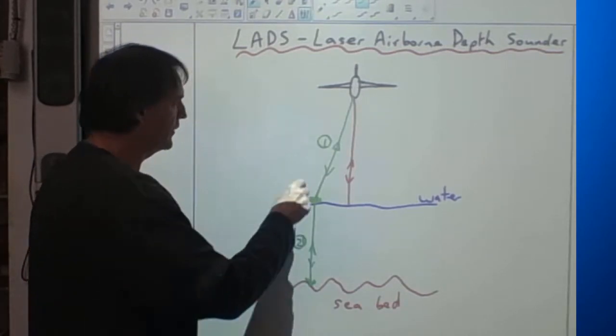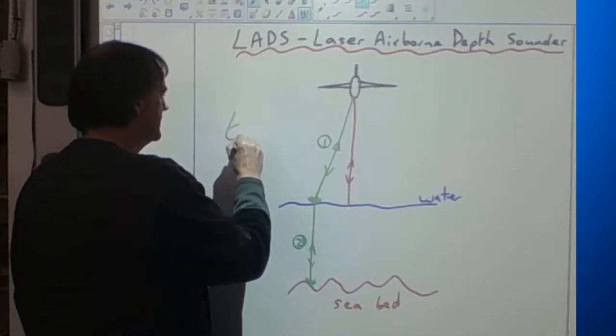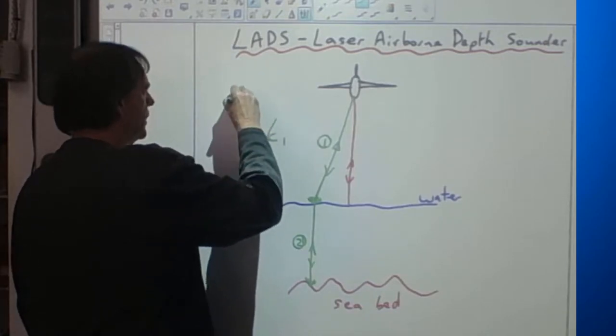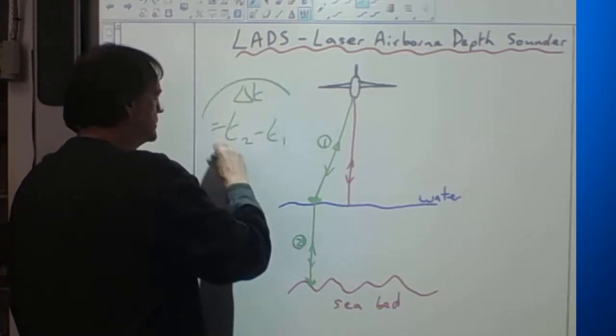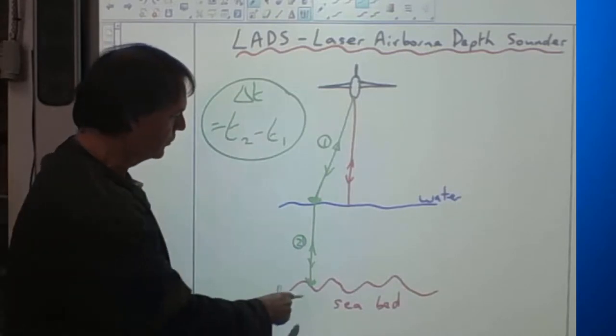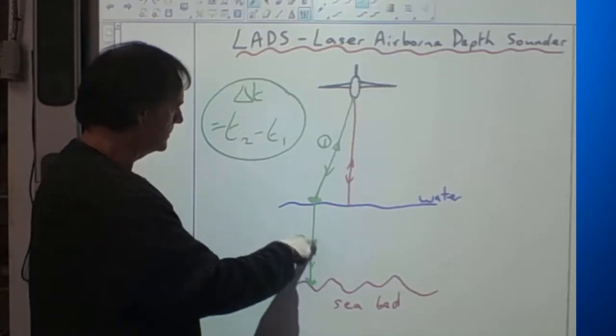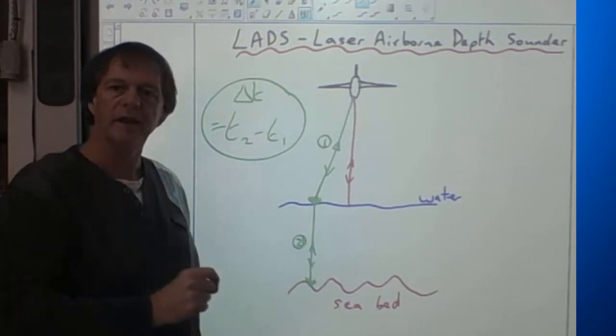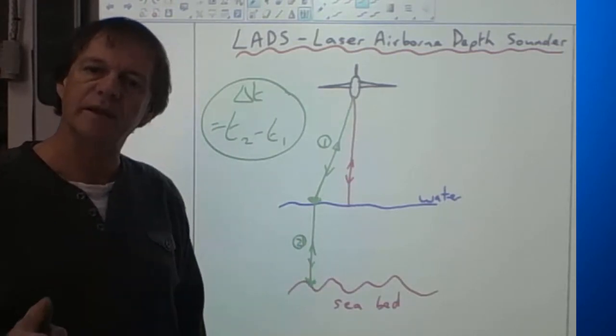Now the important thing to notice here is that we know the time delay between the two beams, T1 and T2. That time delay can be used to work out how deep the water is in this area. So the time delay under the water, that's the extra distance travelled by this beam while it's under water. That's the depth of the ocean bed at that point.